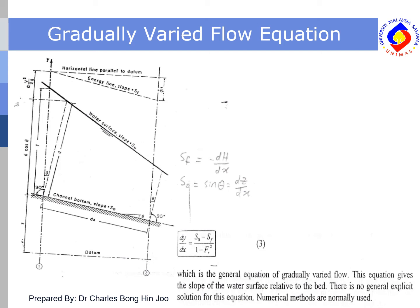In solving the problem for gradually varied flow, we use the general equation: dy/dx equals the channel bottom slope minus the energy line slope, divided by 1 minus the Froude number squared. This equation gives the slope of the water surface relative to the bed. There is no general closed-form solution for this equation; hence, we need to use numerical methods.